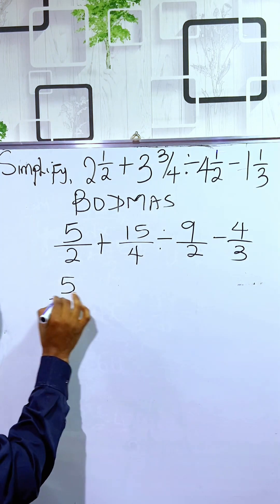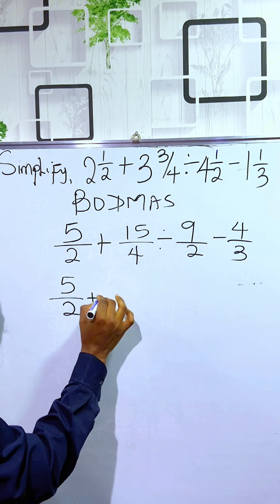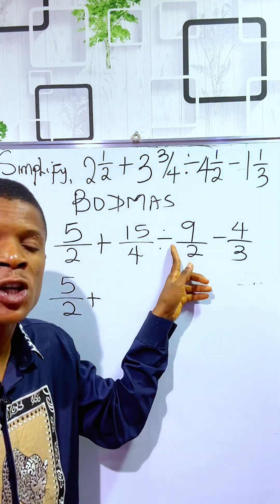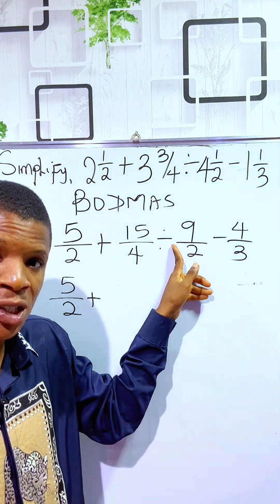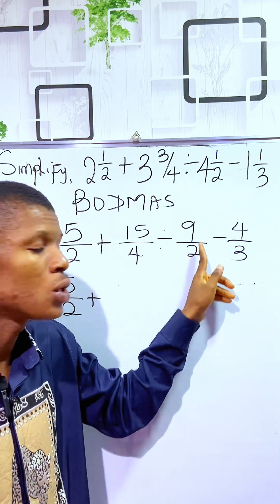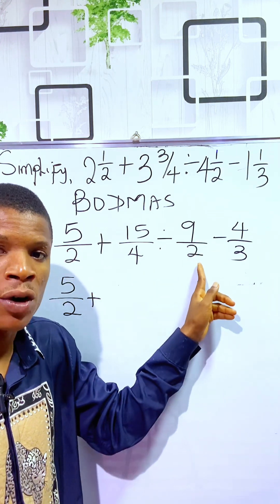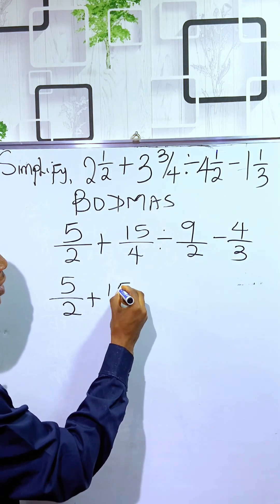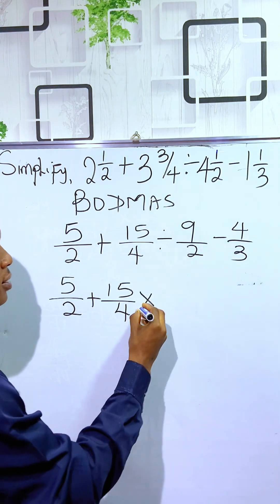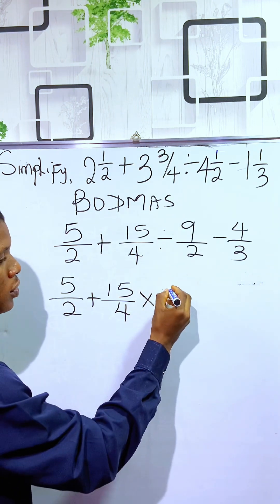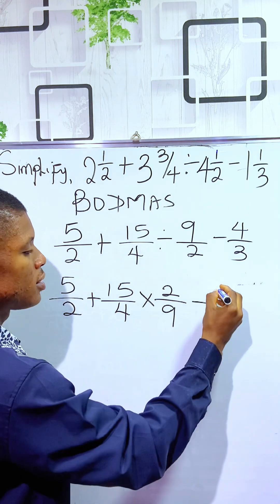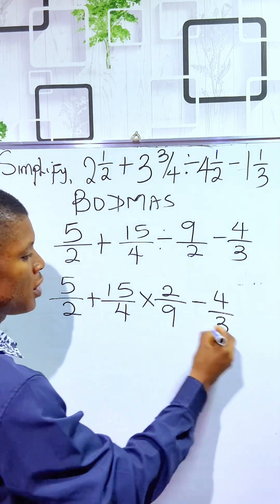We have 5 over 2 plus... To divide fraction, it is best we change the division sign to multiplication, then we flip the positions of the numerator of the corresponding fraction. Meaning that we have 15 over 4 times... Flipping the positions, you have 2 over 9, then minus 4 over 3.